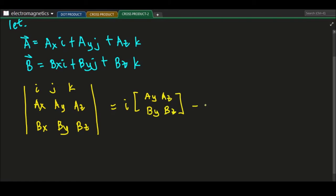Now minus. So we're going to go for j. So we'll cover j. So we'll get this vector. Now this matrix here, a two by two matrix. So that will be A x, B x, and A z, B z.